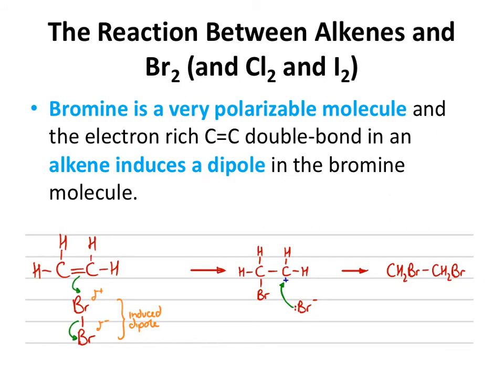Once it is polarized, we're looking at a mechanism identical to the hydrogen halide mechanism. The pair of electrons in the pi bond attack the delta-positive bromine; the pair of electrons in the bromine–bromine bond moves onto the further bromine to make a bromide ion; we get a carbocation intermediate; then the bromide ion attacks the positively charged carbon. The product when reacting an alkene with a halogen like bromine is a dihalogenoalkane — a haloalkane with two carbon–halogen bonds.